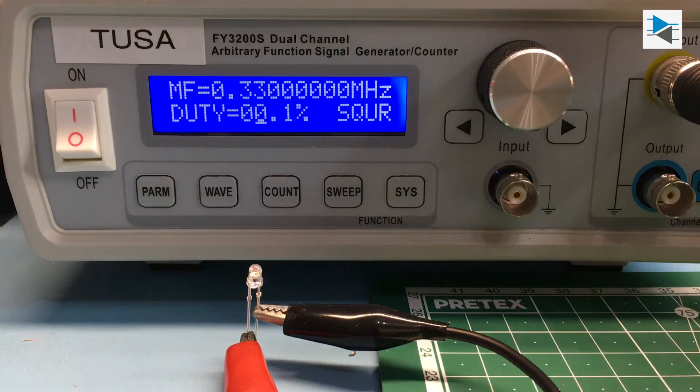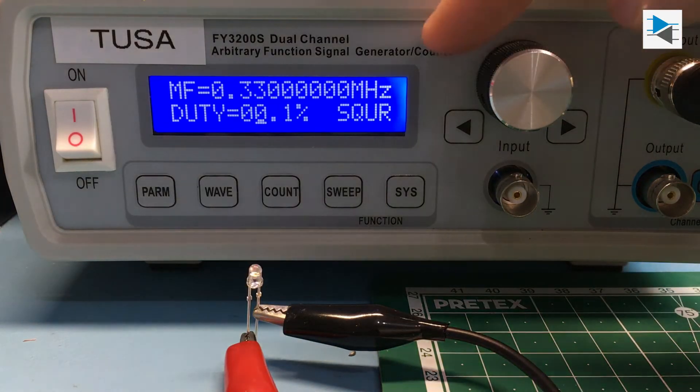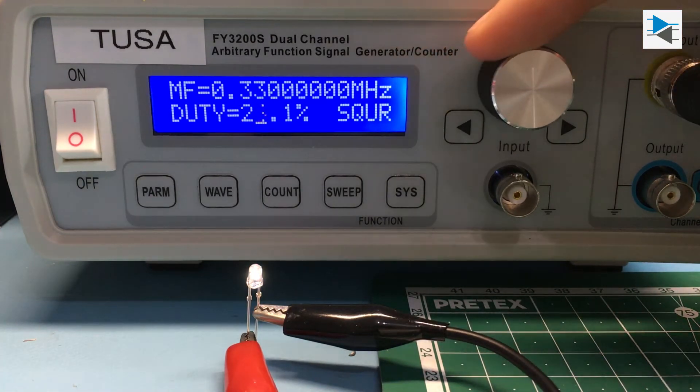Now, let's get fancy. Let's try out a function generator. Using a square wave with a variable duty cycle, we can even achieve a dimming effect. How fancy is that?